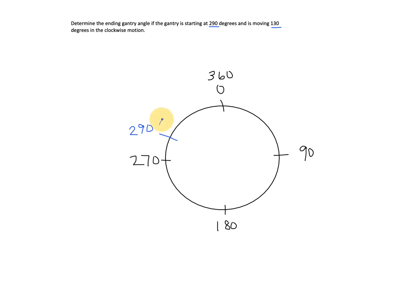So first we will find the distance between 290 and 0 or 360 and 290. So we can do 360 and then subtract 290, our starting gantry angle. So we're getting the difference between the two so that we can determine the remaining gantry angle motion.